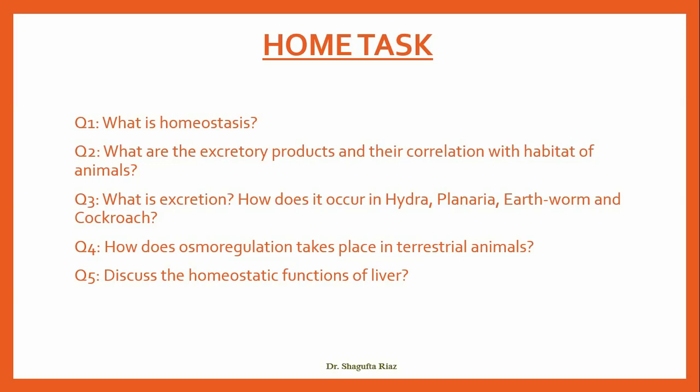That is all. Now for your home task from this lecture and the previous one, there are five questions: What is homeostasis? What are the excretory products and their correlation with the habitat of animals? What is excretion and how does it occur in hydra, planaria, earthworm, and cockroach? How does osmoregulation take place in terrestrial animals? And discuss the homeostatic functions of liver.